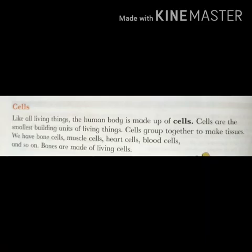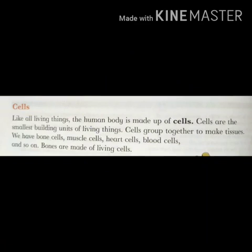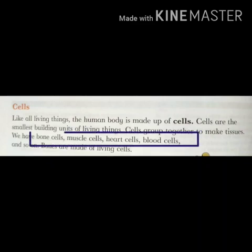Let's read about cells. Like all living things, the human body is made up of cells. Cells are the smallest building units of living things. Cells group together to make tissues. We have bone cells, muscle cells, heart cells, blood cells, and so on.